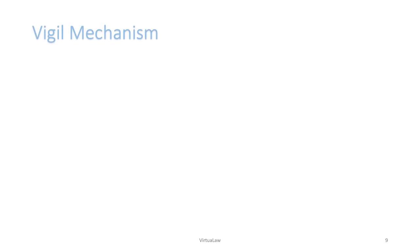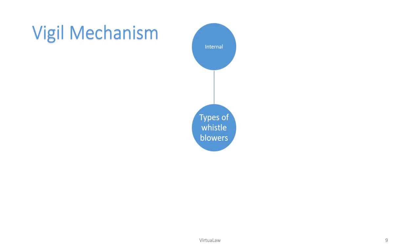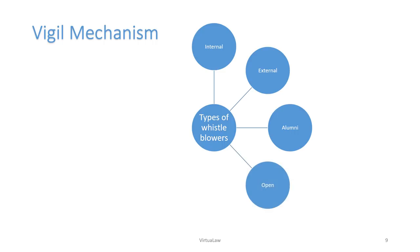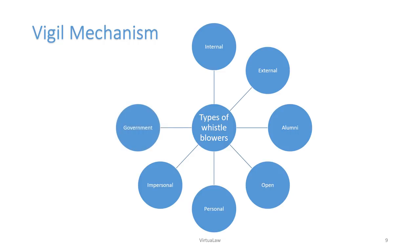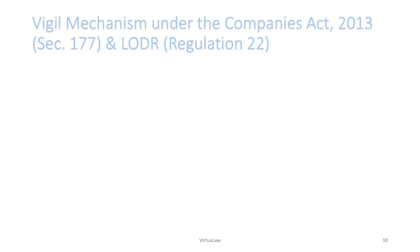Types of whistleblowers: when misconduct is disclosed to top management within an organization it is internal whistleblowing; when disclosed to external regulators or government it is external whistleblowing; when intimated by a former employee it is alumni whistleblowing; when the whistleblower's identity is revealed it is open whistleblowing; when the wrongdoing affects only a specific individual it is personal whistleblowing; when it harms others more broadly it is impersonal whistleblowing; when it pertains to acts of a government agent it is government whistleblowing; and when it relates to corporate wrongdoing it is corporate whistleblowing.